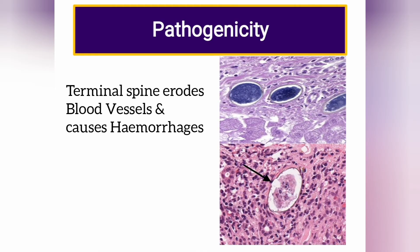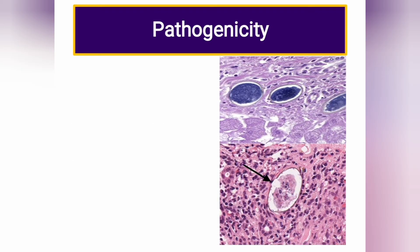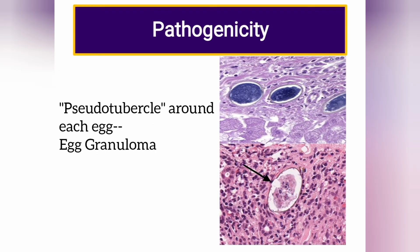This parasite causes many pathogenic lesions in the human body. The terminal spine of the egg may erode blood vessels and cause hemorrhages. The eggs deposited in the tissues act like foreign protein and have an irritative effect. As a result, round cell infiltration and connective tissue hyperplasia occur.